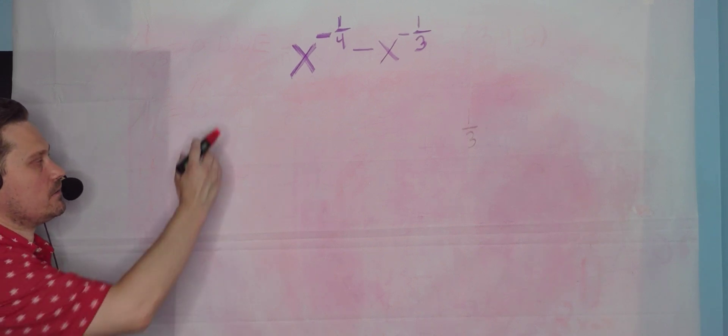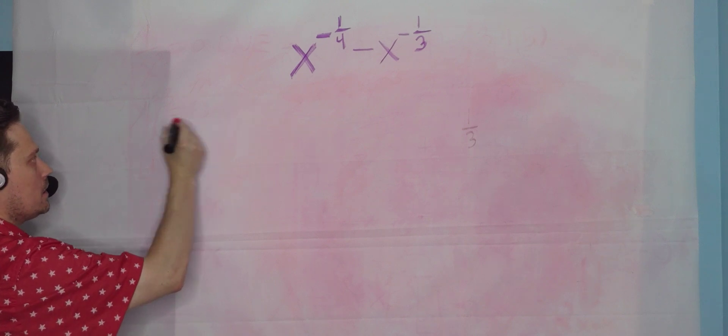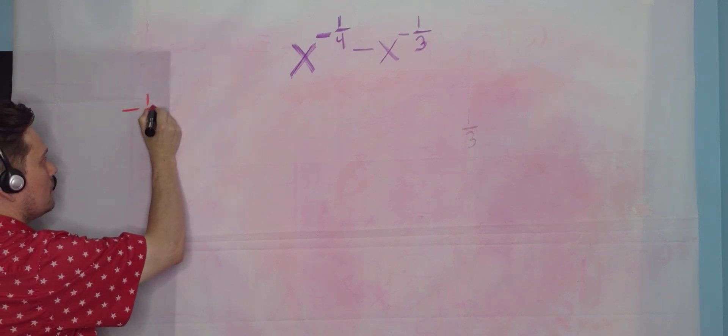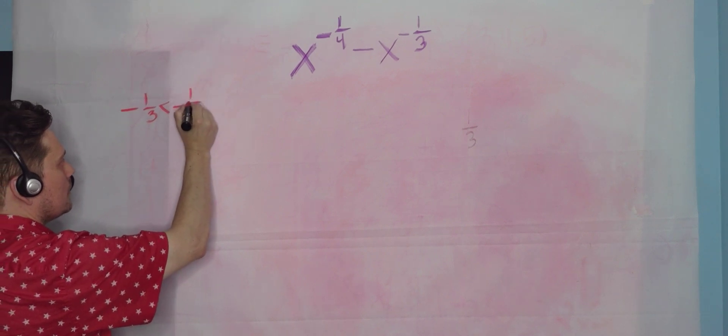Welcome friends, in this one we're going to factor the following expression. So a key observation here is the following, that negative one-third is less than negative one-fourth.